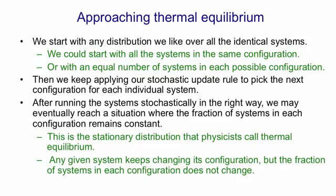Any given system keeps changing its configuration. We apply the update rule and the states of its units will keep flipping between zero and one. But the fraction of systems in any particular configuration doesn't change, and that's because we have many many more systems than we have configurations.